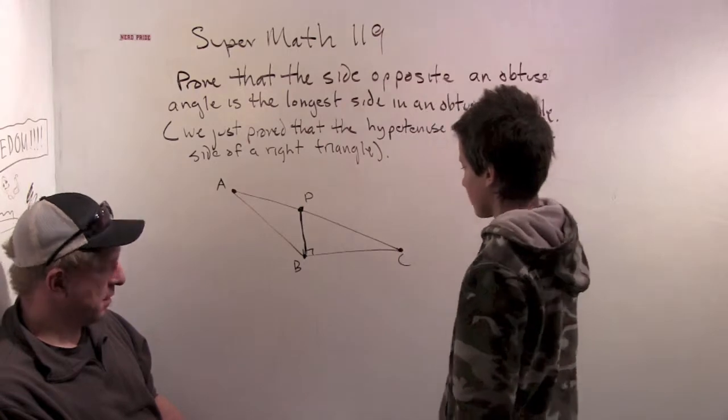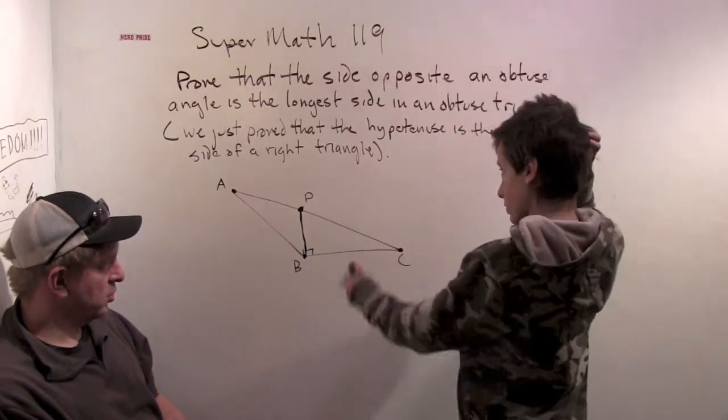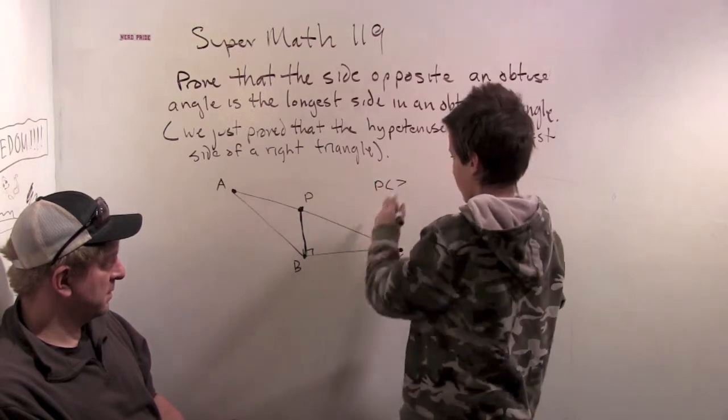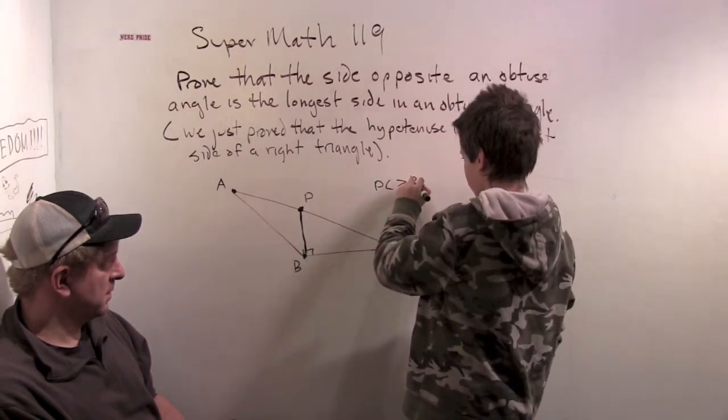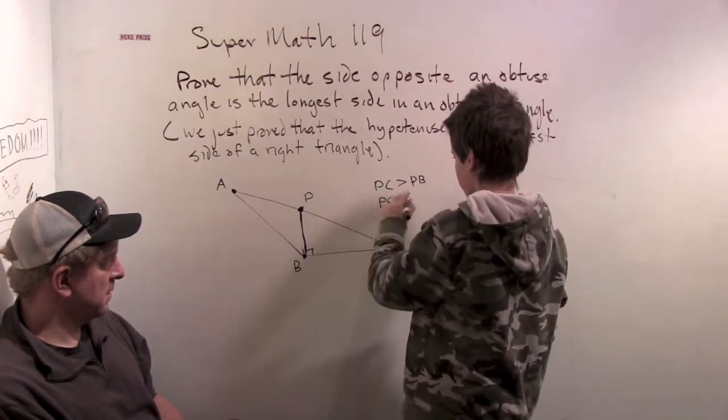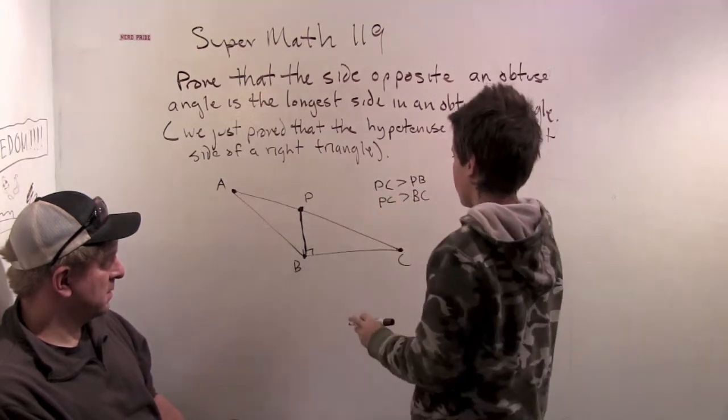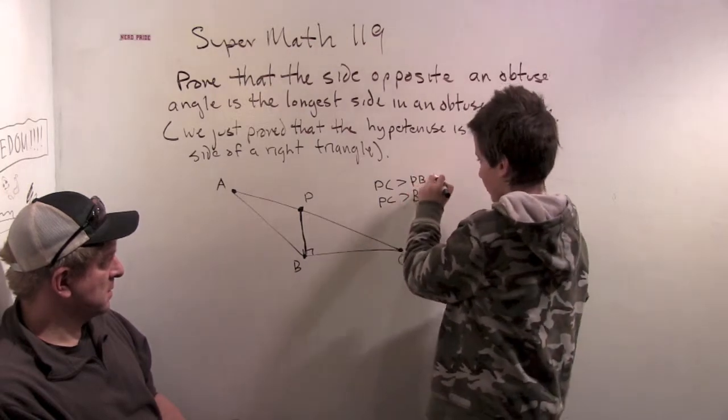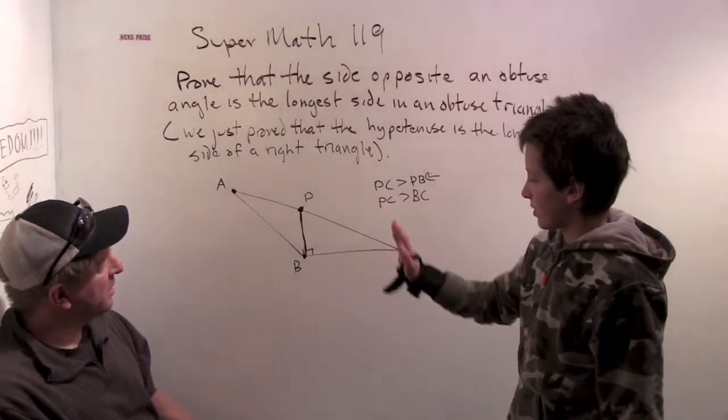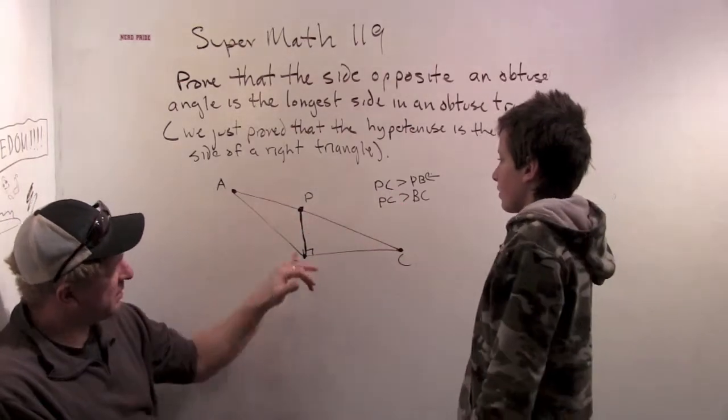So from what we just proved, I know that PC is greater than PB, and PC is greater than BC. But this one doesn't really matter too much because we drew in that. Oh, I see. Okay. You know that PC is greater than PB. How do you know that? Because of what we just proved.